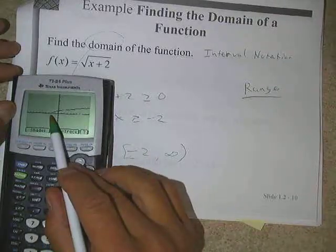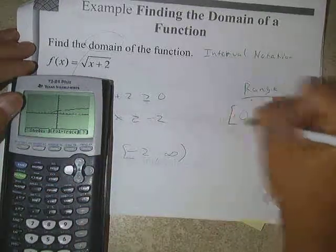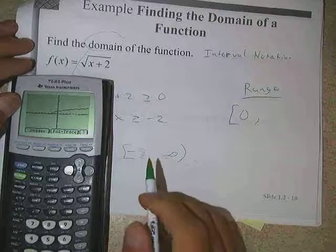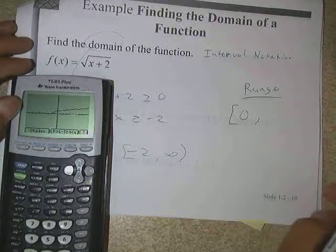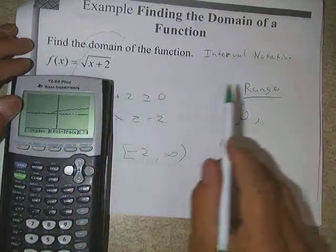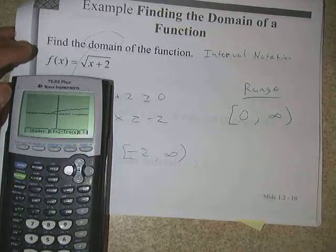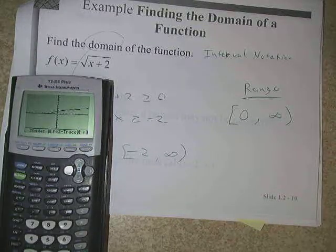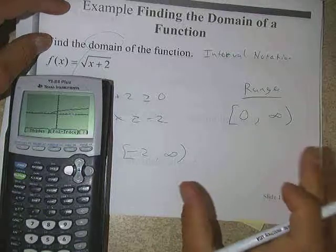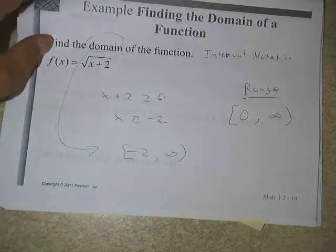The range is a description of the y-coordinates. We want the y-coordinate of the lowest point — in this case, it's that same starting point, and the y-coordinate is zero. We use a bracket because we actually do get to the point (-2, 0) on this curve. On the right-hand side, we want the y-coordinate of the highest point — since this continues to grow forever, there's no highest point, so it also goes to infinity. The range in this case is [0, ∞).